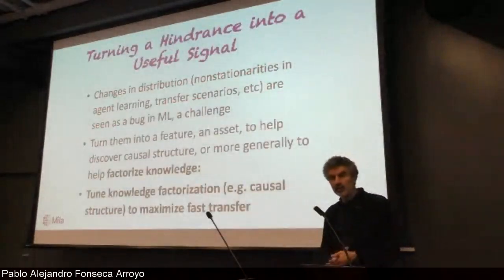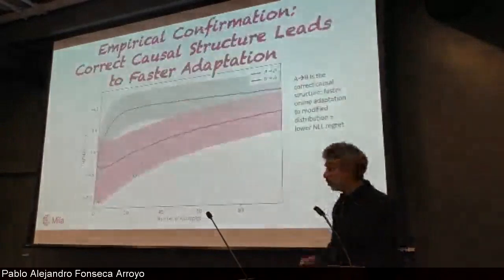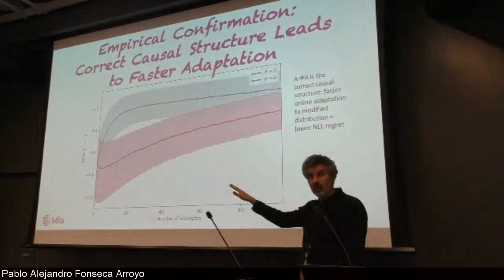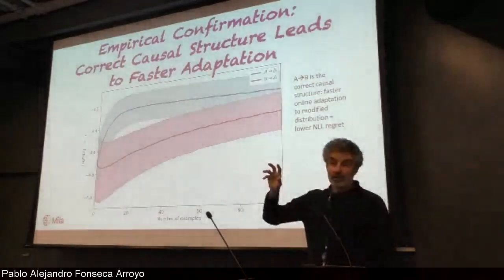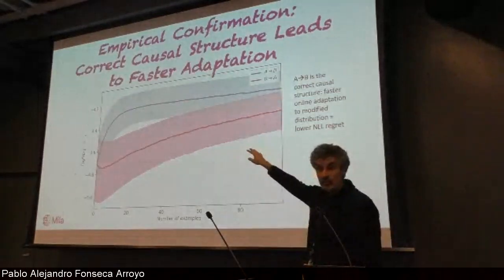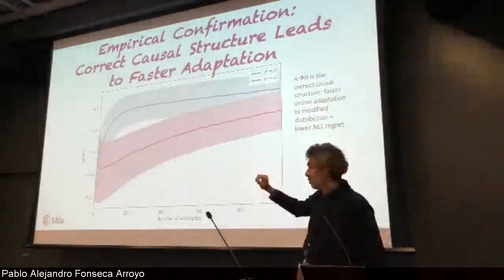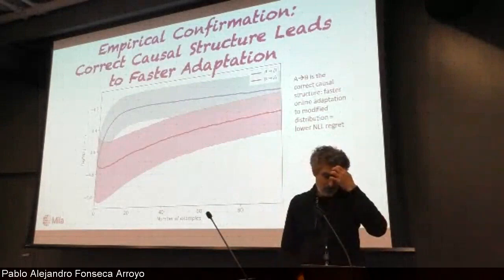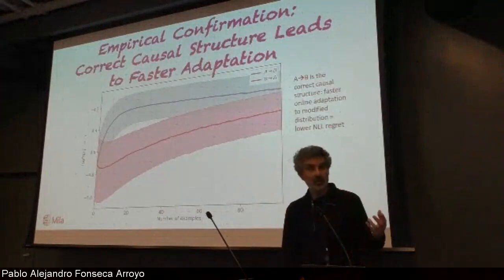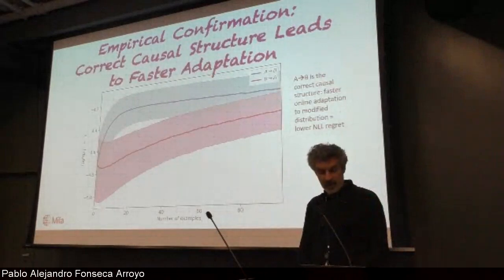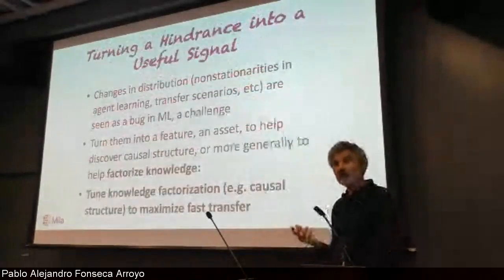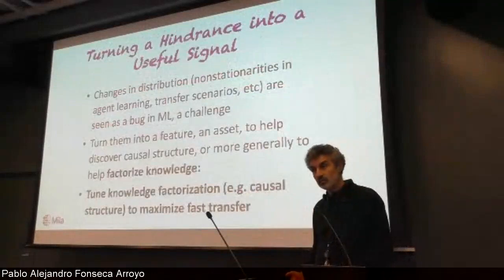What we propose to do in this paper is model selection - change the distribution, see how different models perform, and pick the one that adapts faster. We could create an objective that measures how fast the curve rises, like area under the curve. So we might as well think of this as defining a new objective function, which is how fast you adapt to changes in distribution.